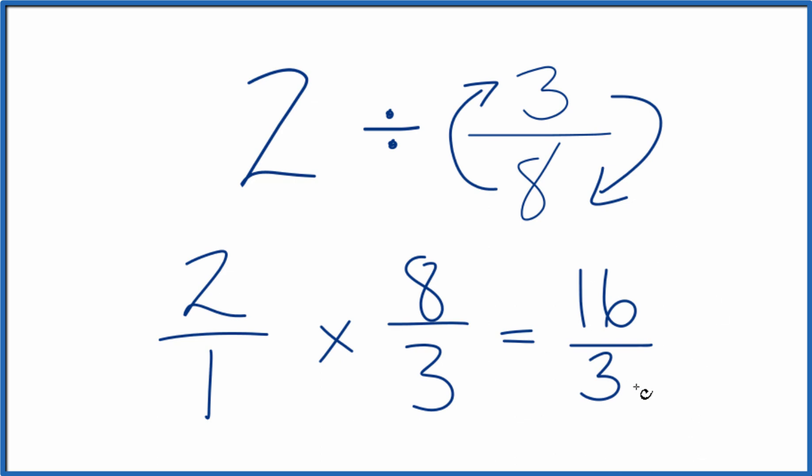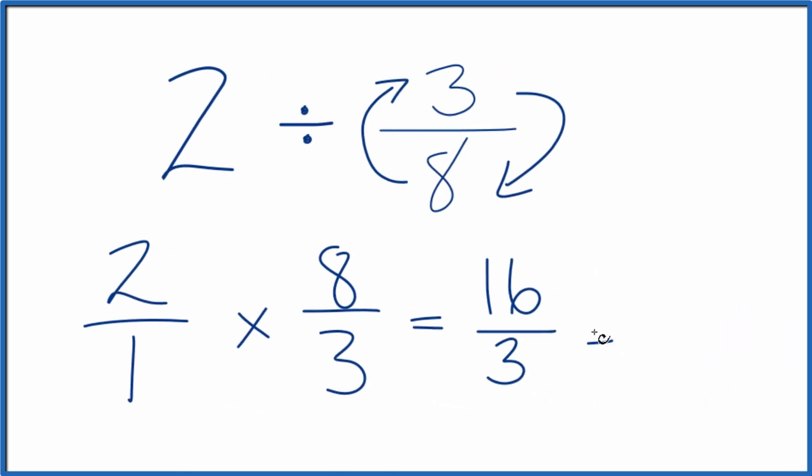This is an improper fraction because 16 is larger than 3, so we could change it to a mixed number. 3 goes into 16... See, 3 times 5 is 15 with 1 left over. So we could call this 5 and 1 third. That's the same thing as 16 thirds.